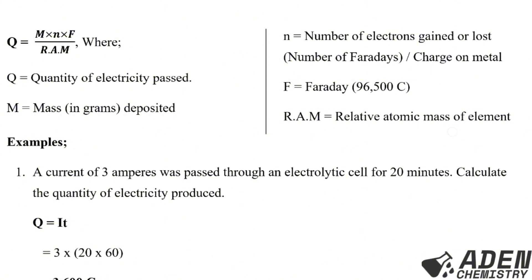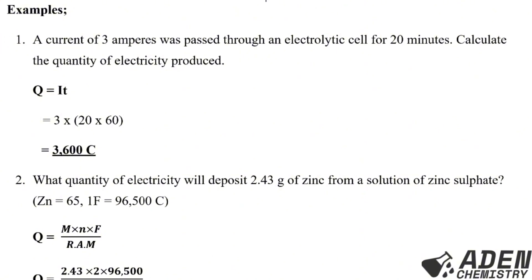Example 1: A current of 3 amperes was passed through an electrolytic cell for 20 minutes. Calculate the quantity of electricity produced. Using Q = IT: I = 3 A, T = 20 minutes × 60 = 1200 seconds. So Q = 3 × 1200 = 3,600 Coulombs.